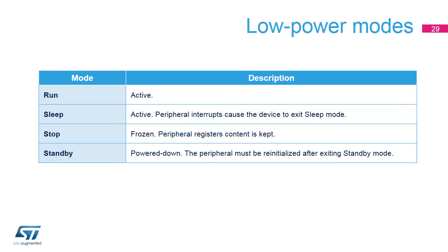The following table shows an overview of the SAI activity for the various possible power modes. The SAI is active in run and sleep modes, frozen in stop mode, or powered down in standby mode. The SAI needs the bus interface clock, or APB clock, and the kernel clock, or SAI-CKX, to work properly.